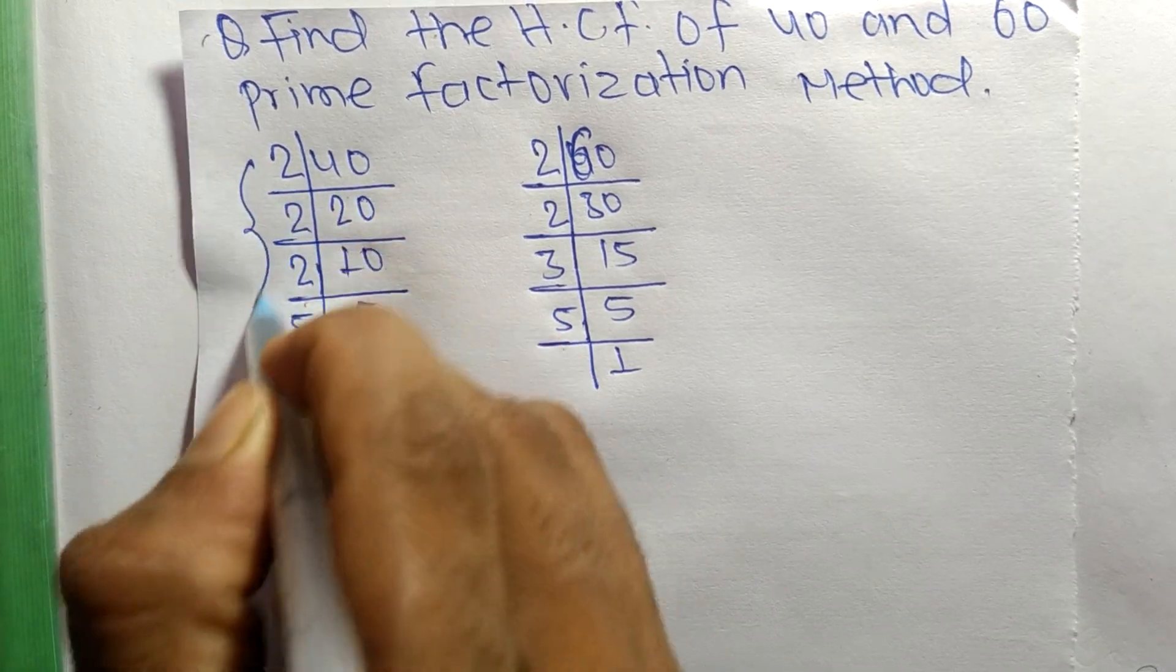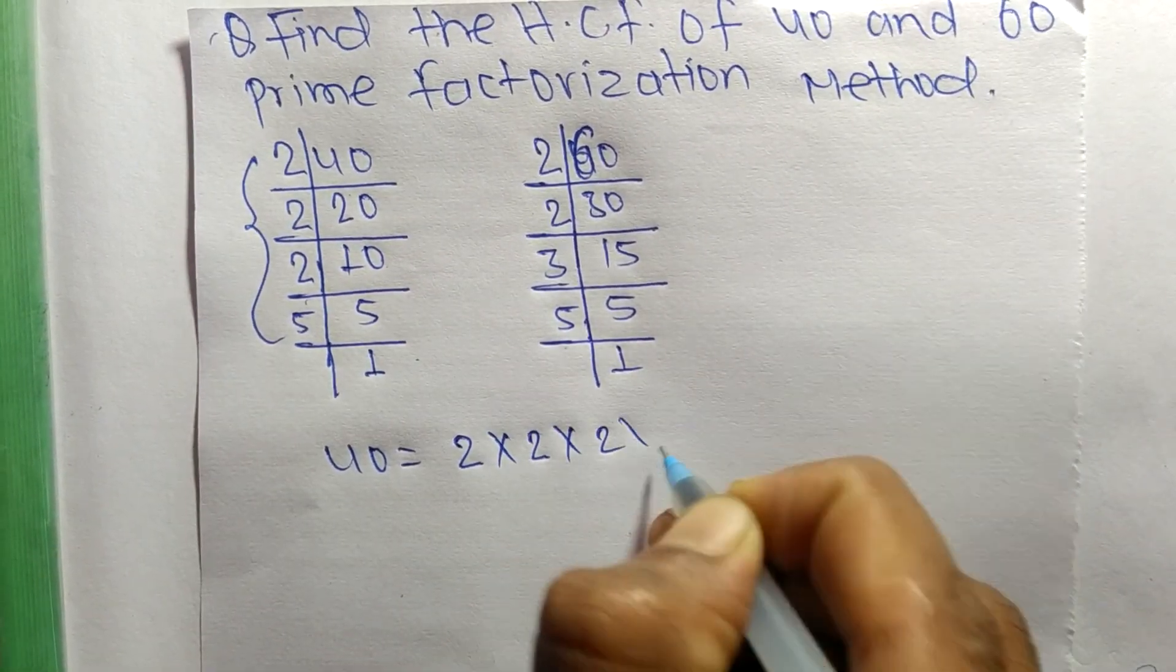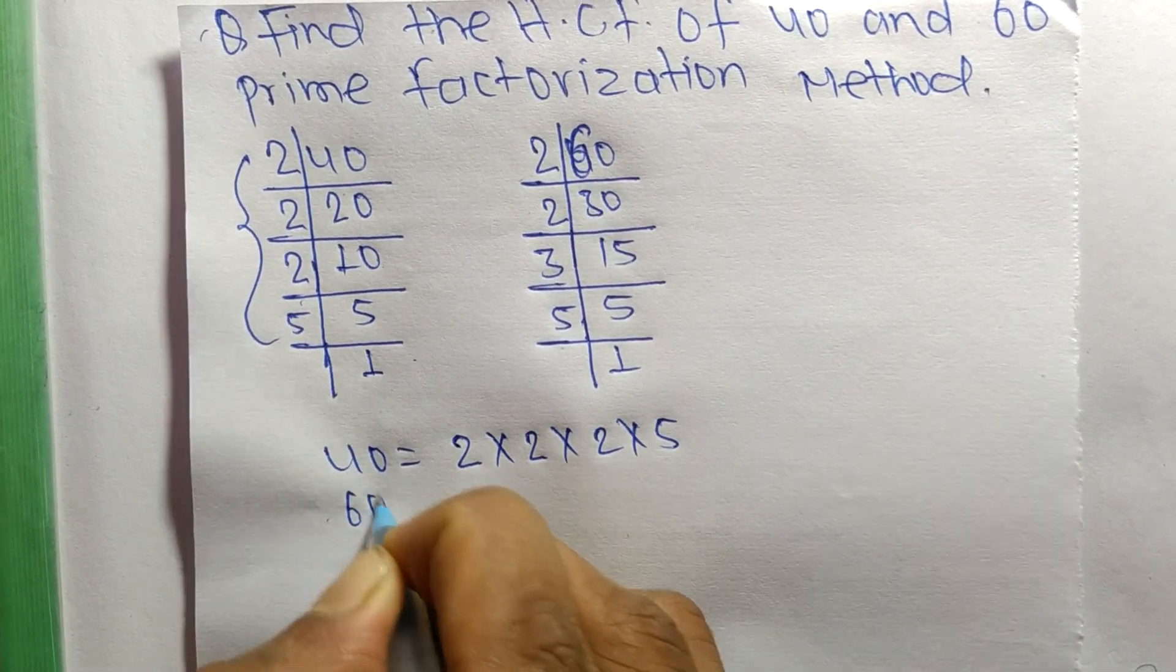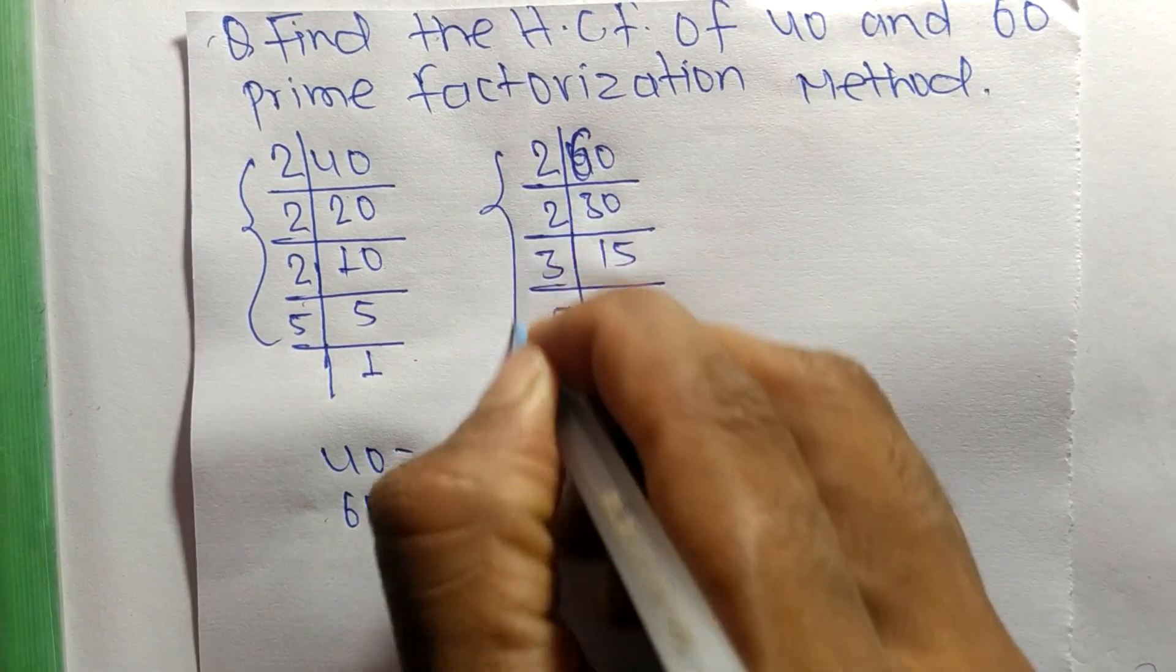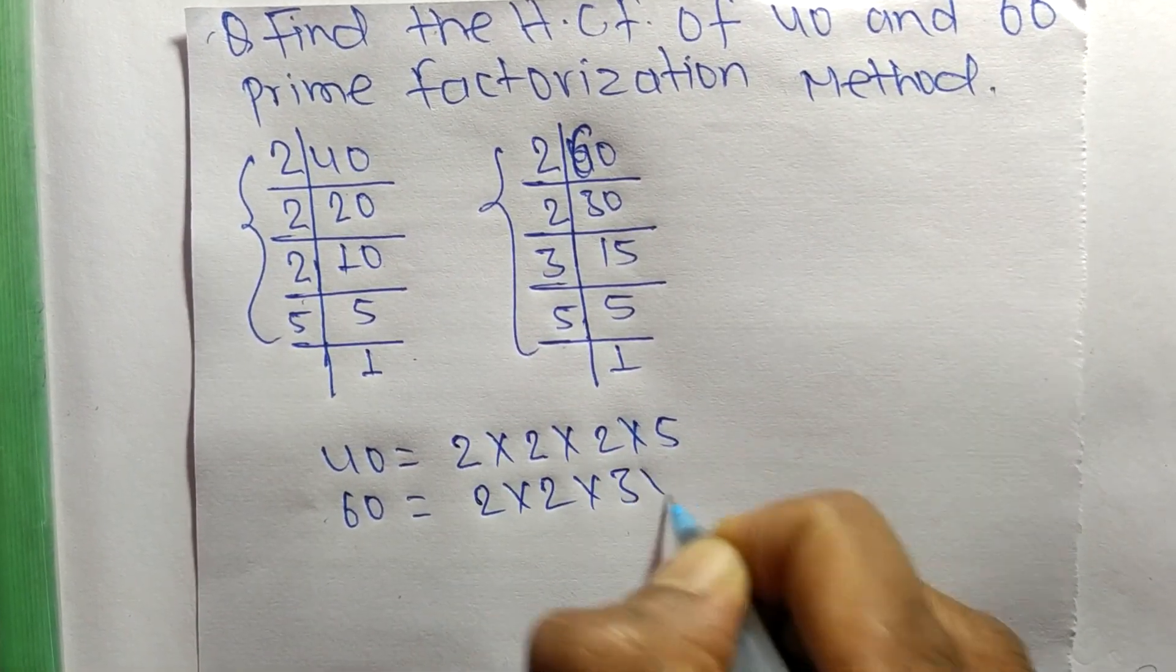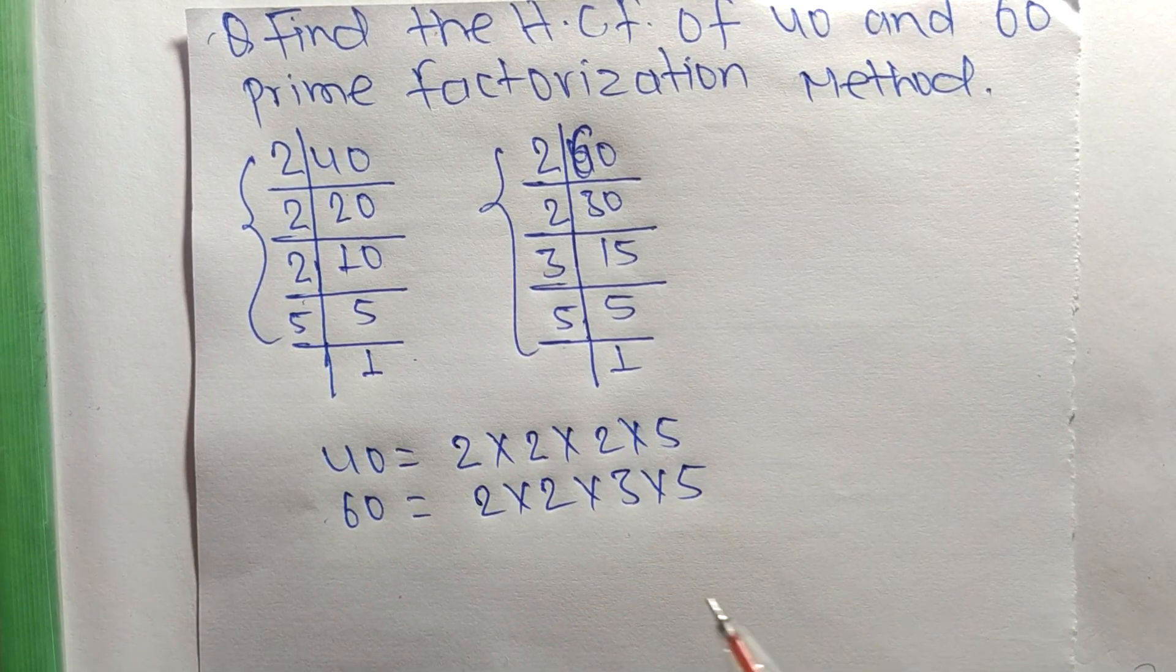From these prime factors, we can write 40 equals 2 times 2 times 2 times 5. Likewise, 60 equals 2 times 2 times 3 times 5.